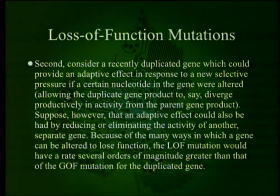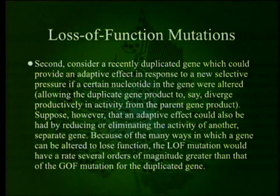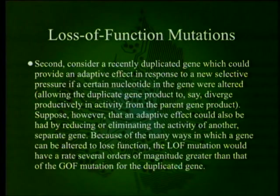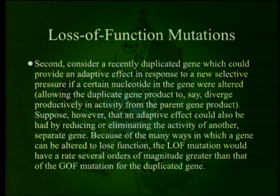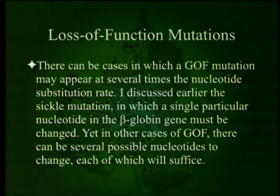Consider two examples. First, a transcription factor binding site 10 nucleotides in length; second, a DNA sequence with 9 of 10 nucleotides necessary to form a second regulatory site. If an adaptive effect could be secured either by mutating the first site to lose its function, or by mutating the mismatching residue of the second site to gain function, the loss of function mutation would appear at 10 times the nucleotide substitution rate, since there are multiple ways to break a functioning element. The gain of function mutation, however, would appear at even less than the basic nucleotide substitution rate, because a currently correct nucleotide might mutate before the incorrect one, and the incorrect one must mutate to the precise correct nucleotide rather than any of the other two.